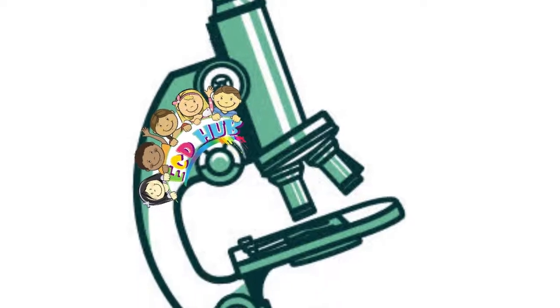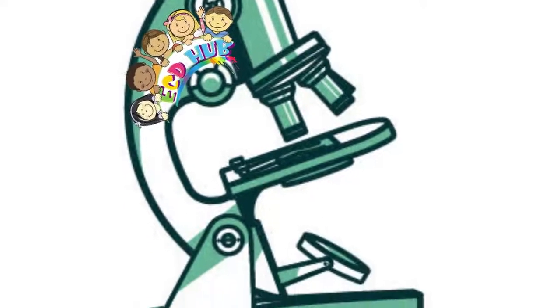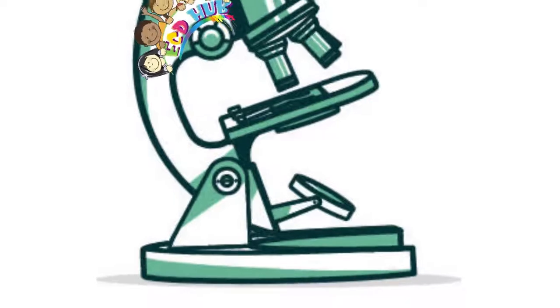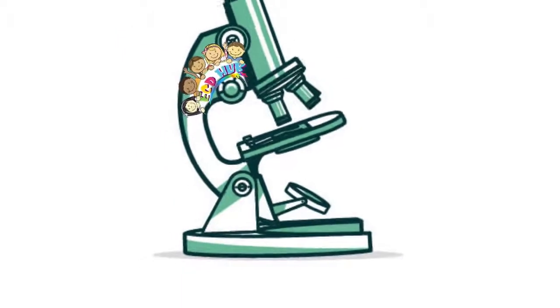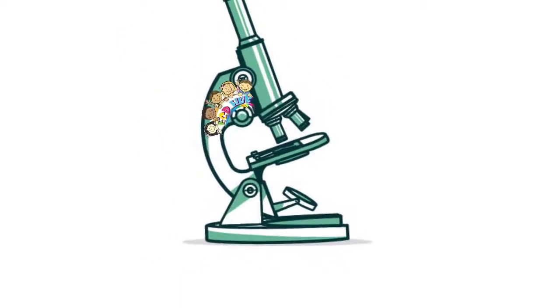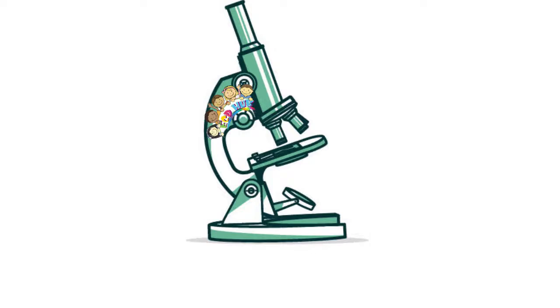While most people picture the compound model from lab class when they think of microscopes, many types of microscopes are actually available. The head body houses the optical parts in the upper part of the microscope.